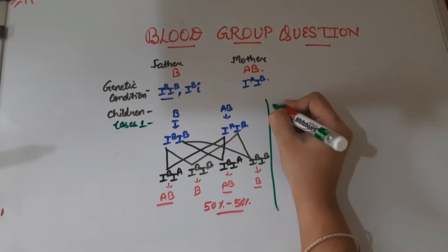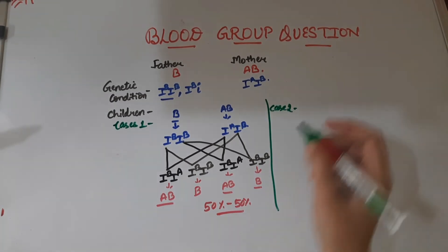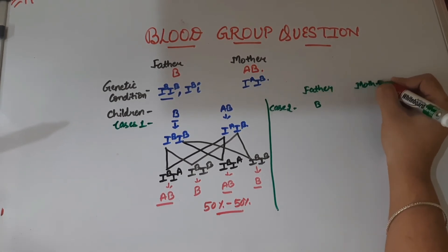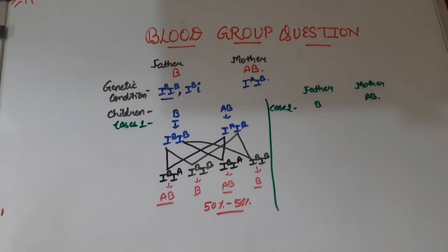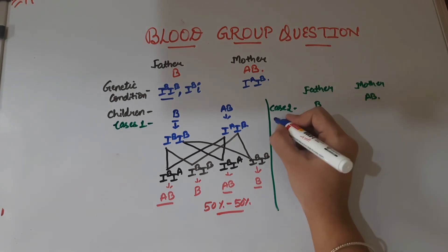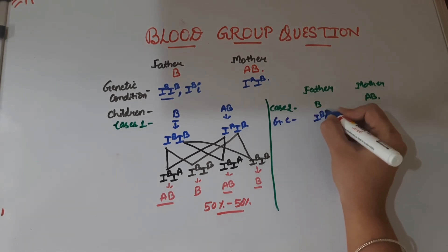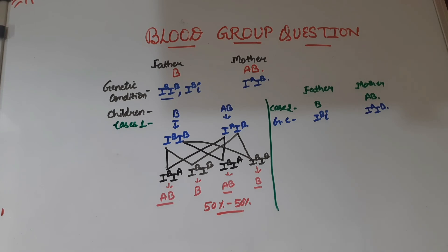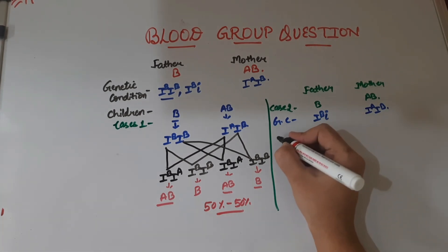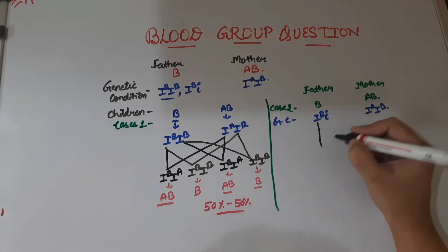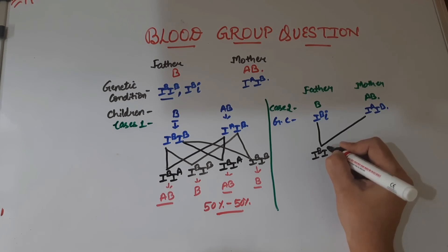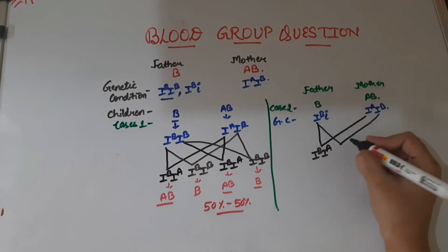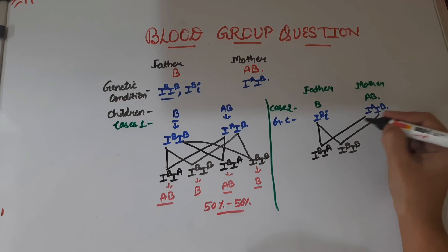Now let us solve Case 2. Again the father has blood group B and the mother has blood group AB, but now the genetic condition of the father is IB and i — the heterozygous condition. The mother's genetic condition remains IA and IB. Let us explore the possibilities for children. If IB from the father fuses with IA from the mother, the combination is IB and IA. If IB fuses with IB, the combination is IB and IB.